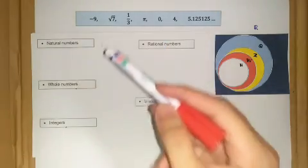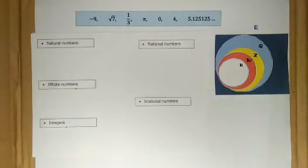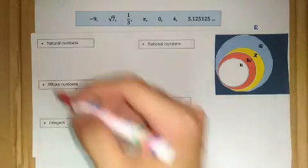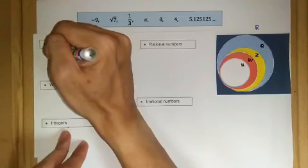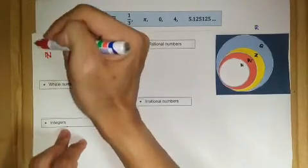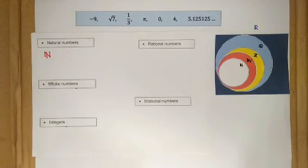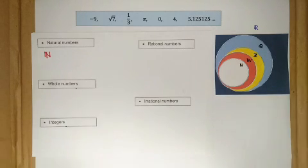The first one is natural numbers. Natural numbers are numbers that we use for counting things and objects, and we denote natural numbers with capital N. The second one is what we call whole numbers. Whole numbers are basically natural numbers including zero, and we denote whole numbers with capital W.